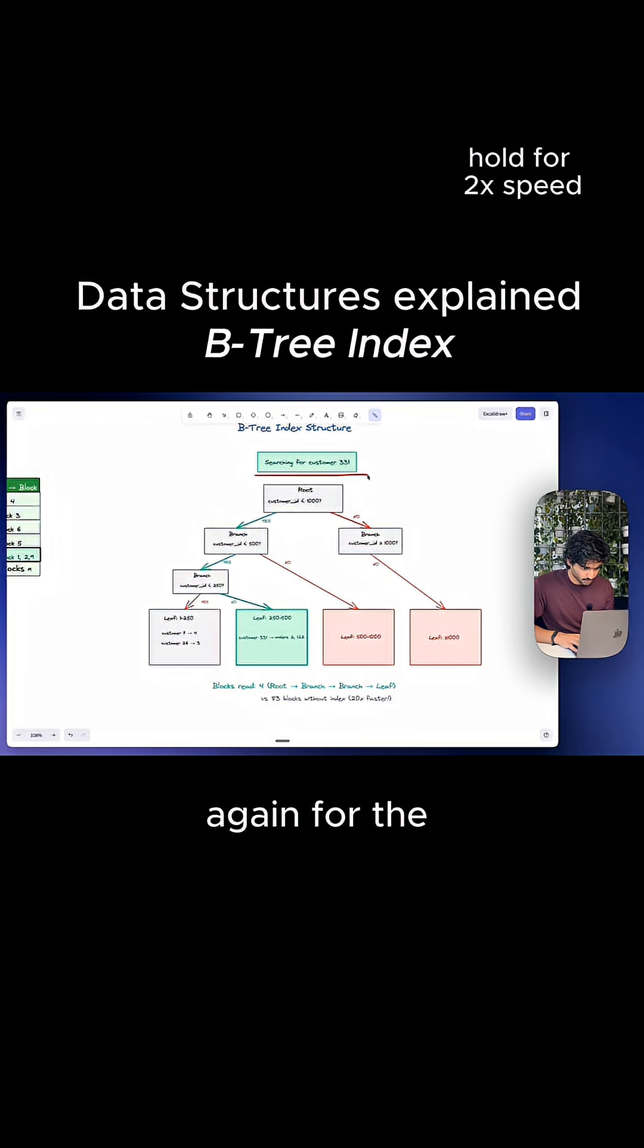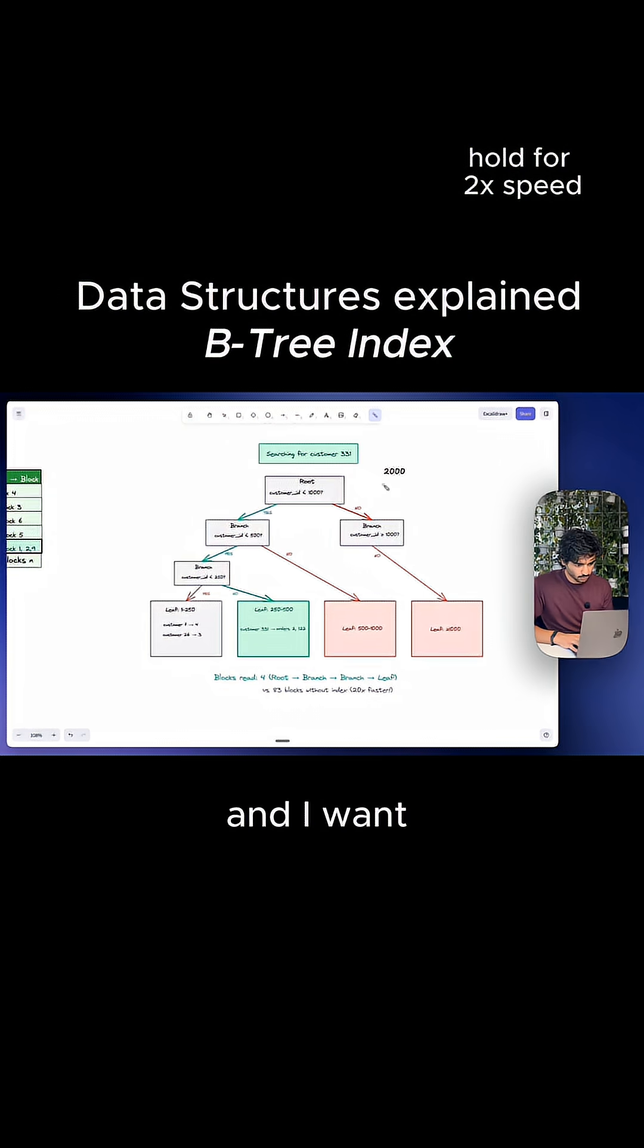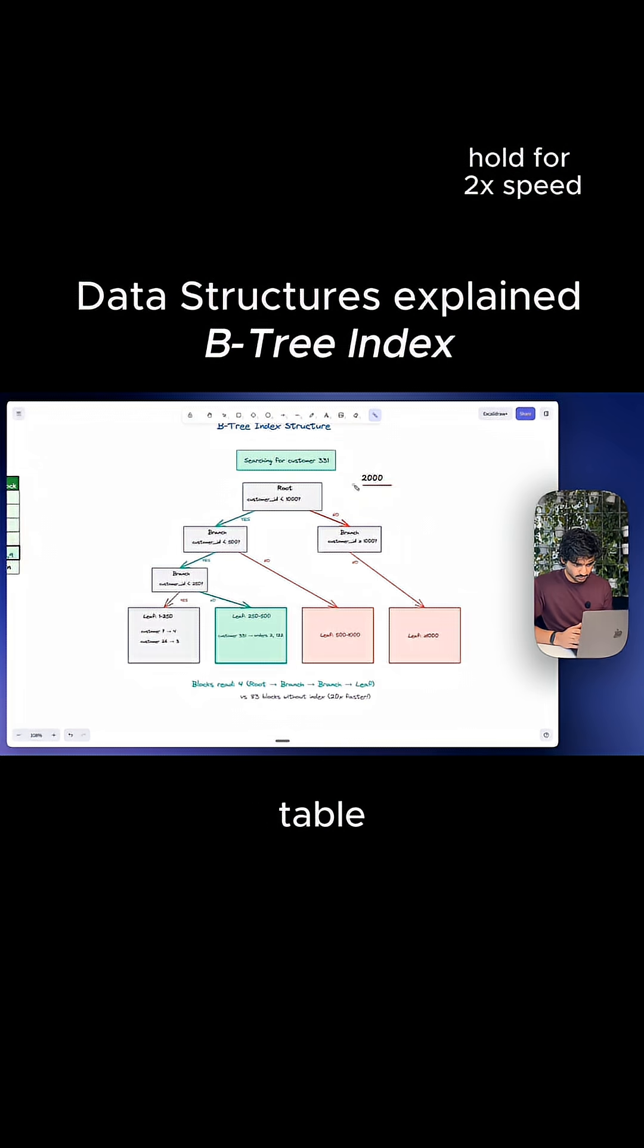So let's say we're searching again for the elusive customer 331. And I want you to assume in our table, we have 2000 people just to make it simple. Now at the top right here, the root, I know it's a little confusing because roots normally at the bottom, but it's at the top. This is one index block, and this is asking, is the customer ID less than 1000? So half the number of our total table. So the thing about this, we have 2000 customers, right? And this question eliminates half of them.